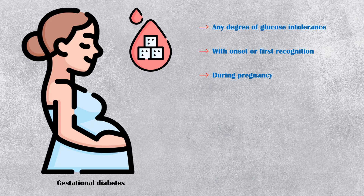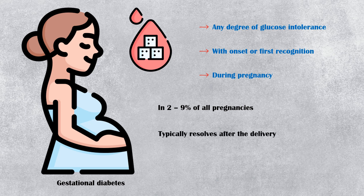Gestational diabetes occurs in 2-9% of all pregnancies. This condition typically resolves after delivery. However, some women may develop outright diabetes within the next 10 years.